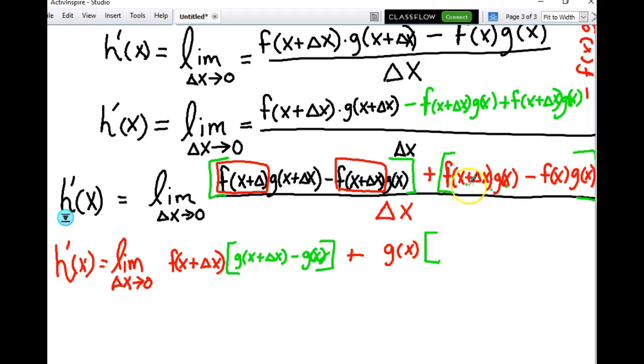So, if I take out that g of x, out of this expression, I'll be left with f of x plus delta x minus f of x. And all this is still over delta x. Okay?